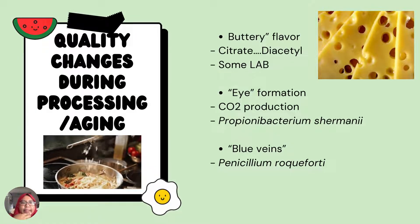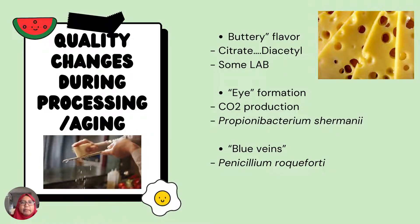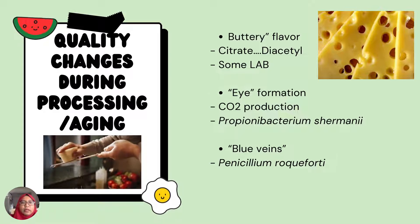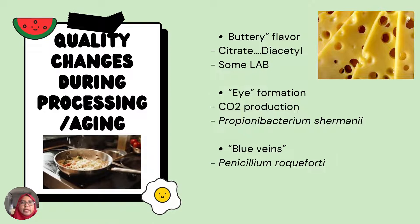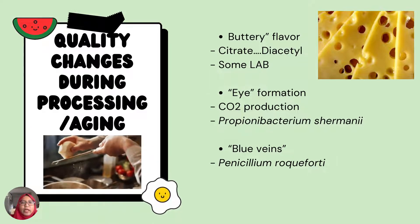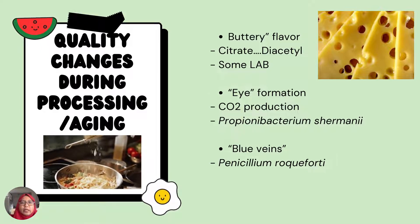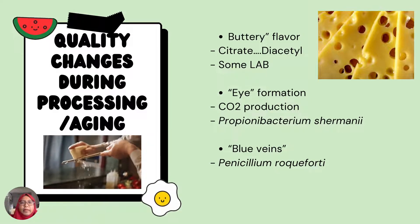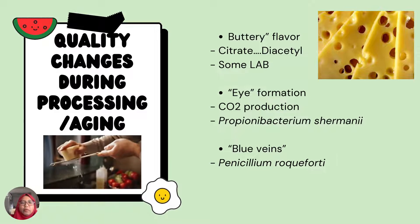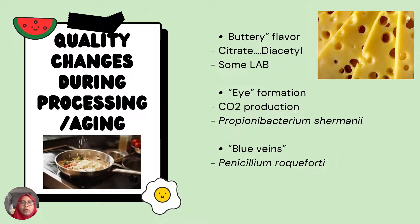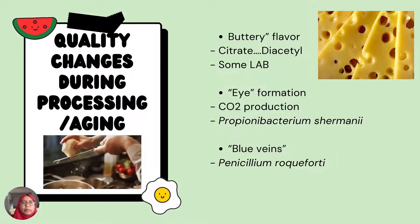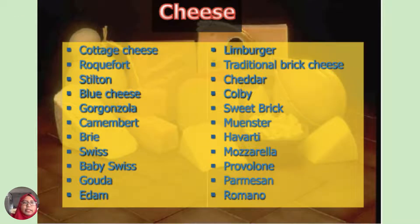Quality changes occur during processing and aging of cheese. Sometimes we add buttery flavor to make the cheese more delicious — for example, some LAB or citrate producers produce diacetyl to create a buttery flavor. Eye formation in cheese is due to CO2 production by certain bacteria, and blue veins in cheese come from Penicillium roqueforti. Examples of cheeses include cottage cheese, blue cheese, brie, Swiss, baby Swiss, gouda, cheddar, sweet brick, Havarti, mozzarella, parmesan, and many more.